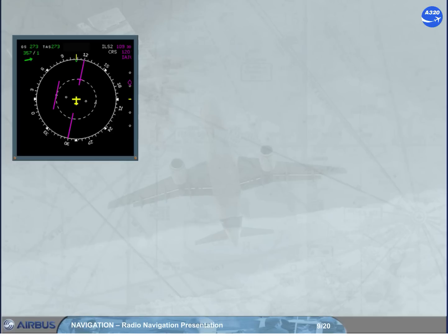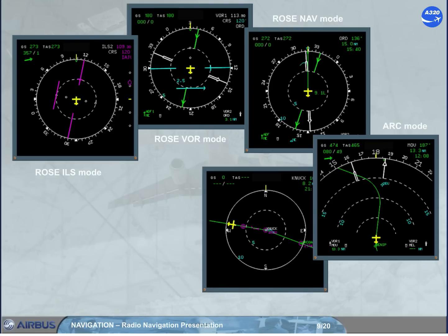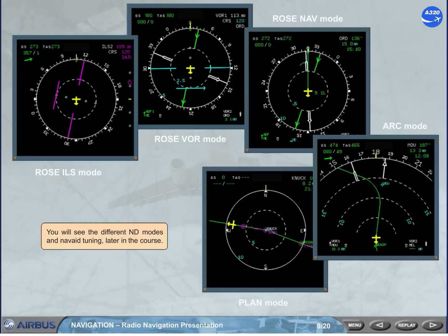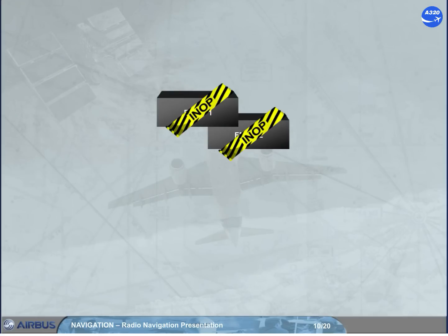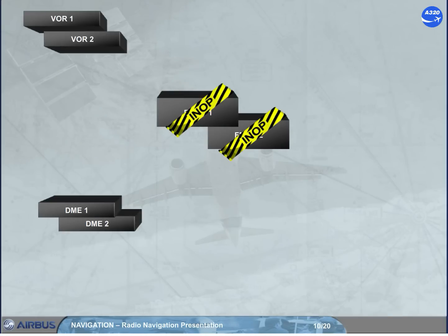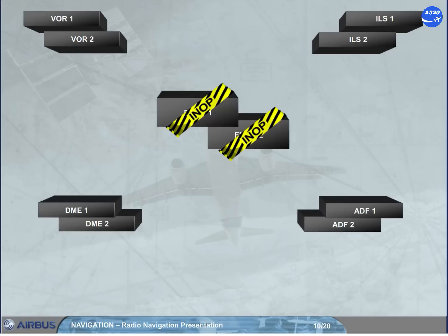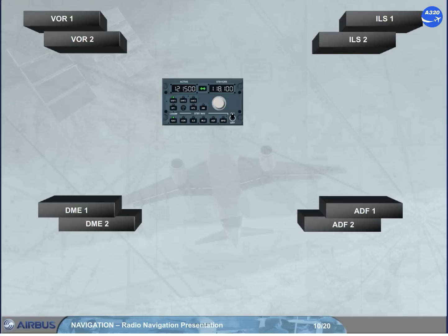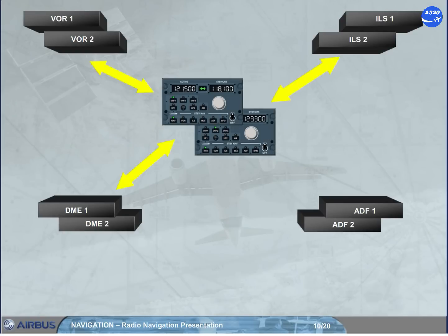You will see the different ND modes and navaid tuning later in the course. In the unlikely event of a double FMGC failure, the backup tuning mode provides radio navigation redundancy to the crew.